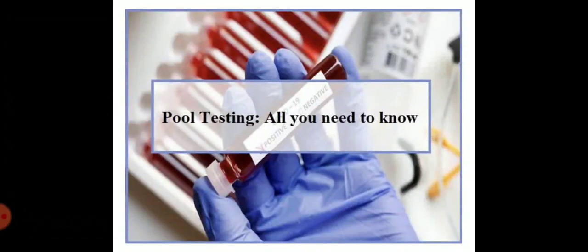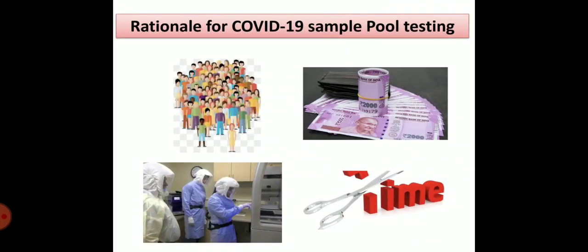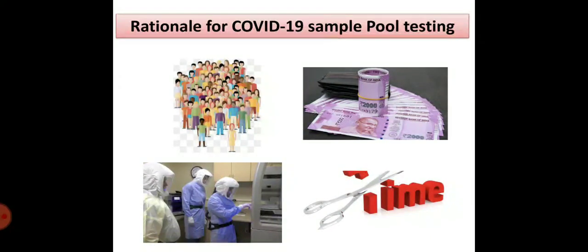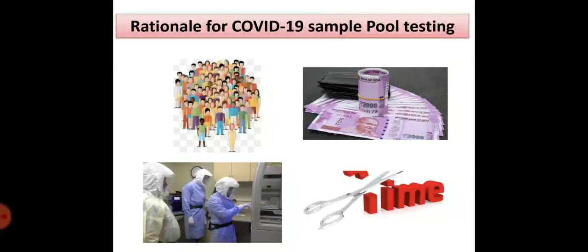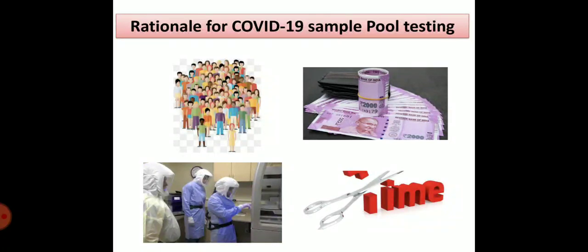That is very important. There are some recommendations by ICMR — I'll come to that later. So why should we go for sample pooling? Imagine that in a world where many populations are affected, in India there is a huge population. If you want to screen the entire population it is really difficult — impossible, I would say. By doing sample pooling we can really achieve that. Instead of doing five individual tests, you can do one test and have five individual results ready.